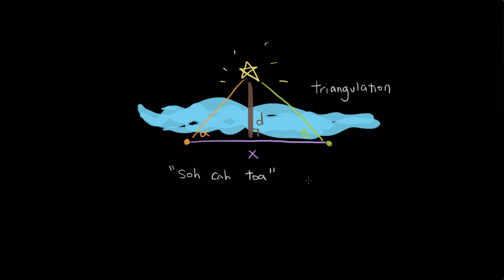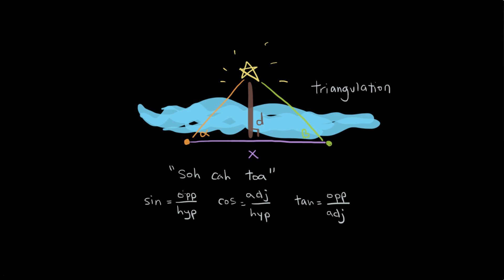This is what I like to call SOHCAHTOA — the mathematical battle cry. SOHCAHTOA is a mnemonic that helps you memorize sine, cosine, and tangent, which are the staples of trigonometry. Sine is opposite over hypotenuse (SOH), cosine is adjacent over hypotenuse (CAH), and tangent is opposite over adjacent (TOA) — SOHCAHTOA.